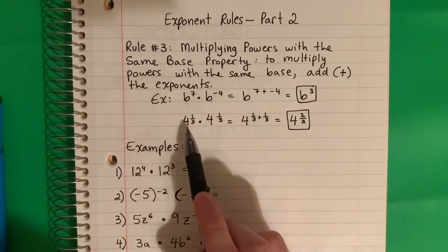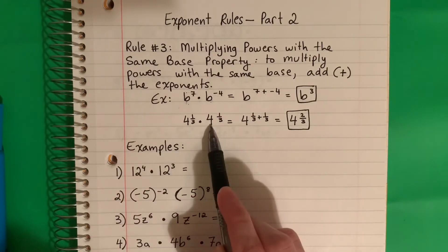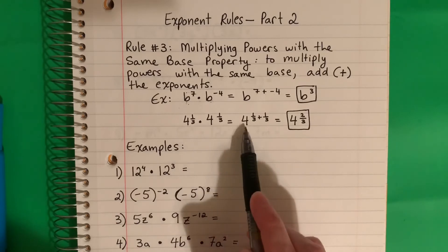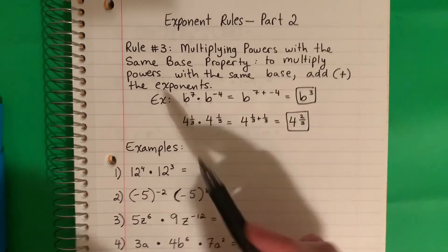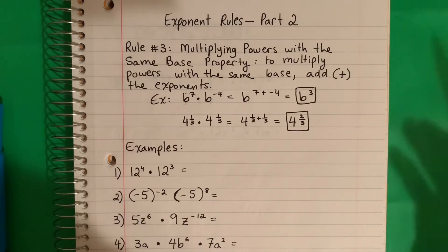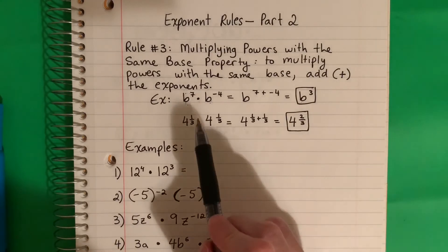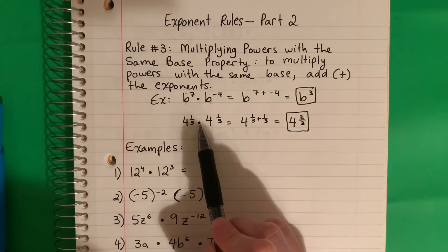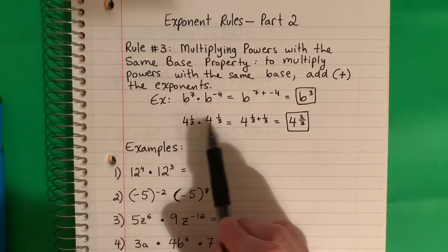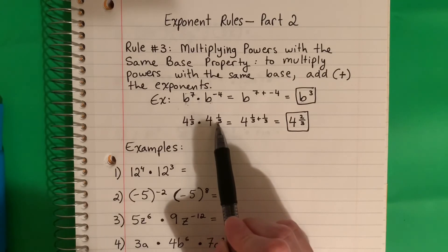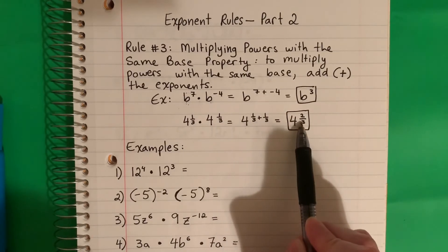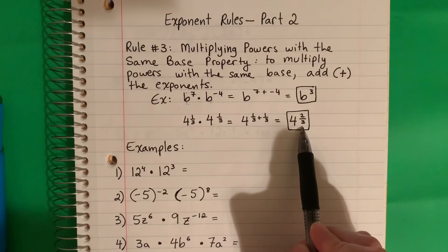Same here — I have the same base, el mismo base, which is 4. So I'm going to copy it and it's multiplication, but for exponents you don't multiply, you do plus. Pero aquí es multiplicación, pero por exponentes no vamos a multiplicar, vamos a sumar. So 1/3 plus 1/3 equals 2/3. Copy the base and you get 4 to the 2/3 power.